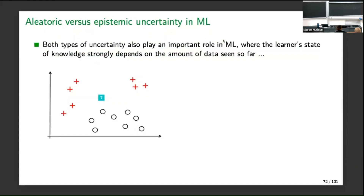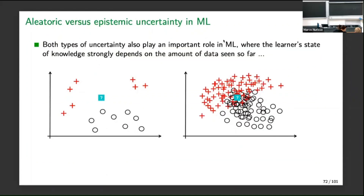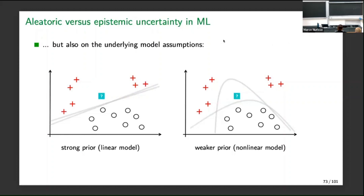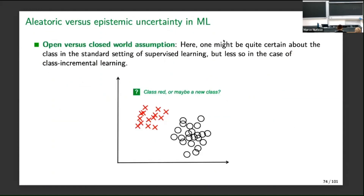Here is a typical example already shown in the beginning: binary classification, where in one case uncertainty is more aleatoric in nature, and in the other more epistemic. In order to represent and quantify uncertainty meaningfully, you have to start from some concrete assumptions you do not call into question. Otherwise it's impossible to give any guarantees — just as generalization performance guarantees in machine learning are always conditional on assumptions like IID data.